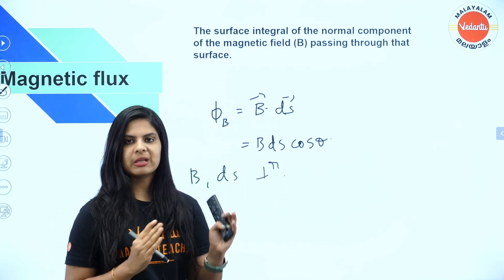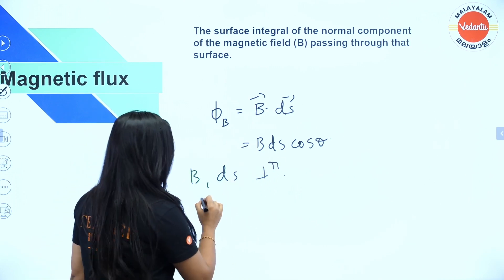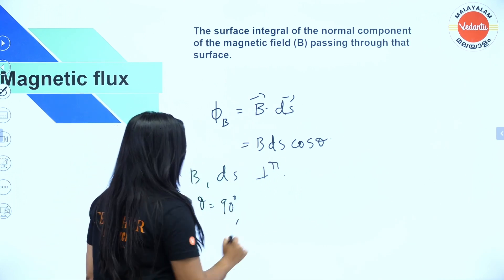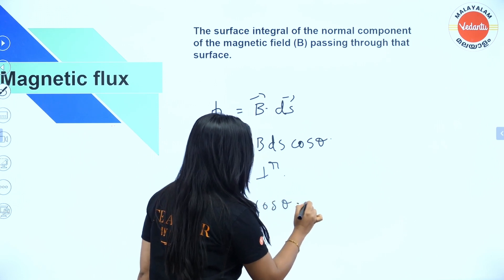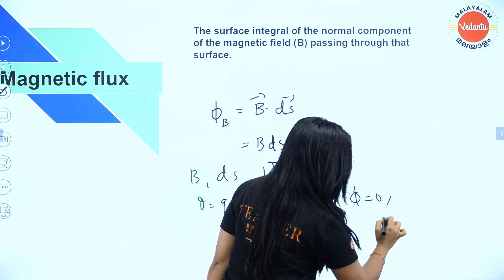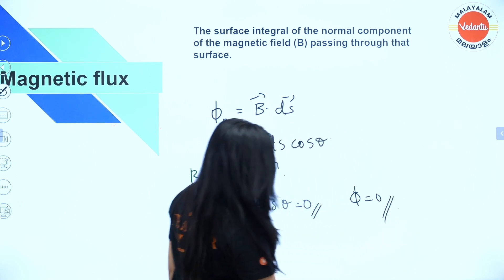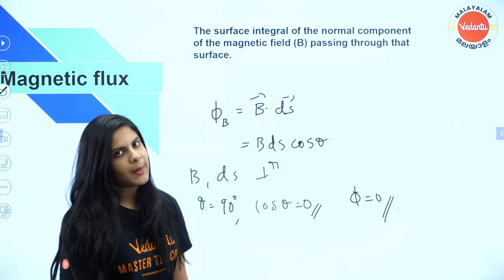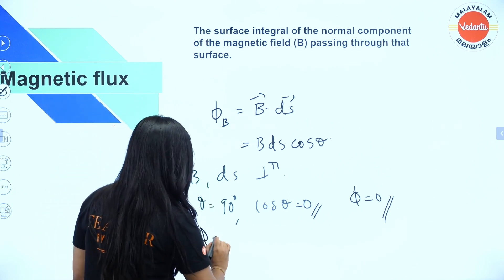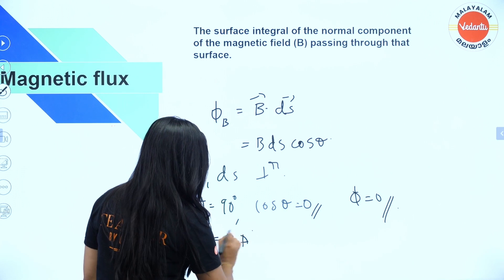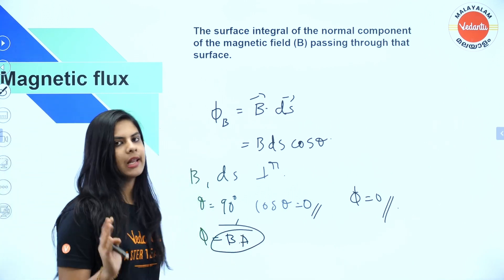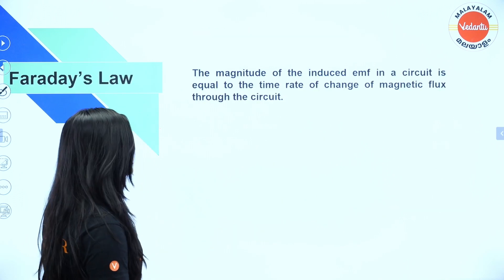B and the area vector are perpendicular — that is what we call theta at 90 degrees. That means cos theta value is 0, so flux is equal to 0. When the field and area are parallel, the value of flux will be equal to B times A — that is the field multiplied by the area.